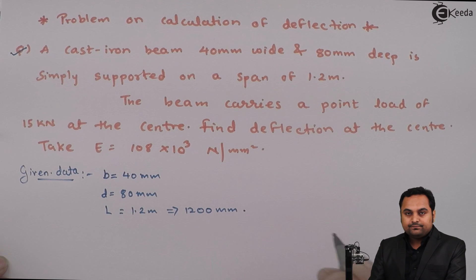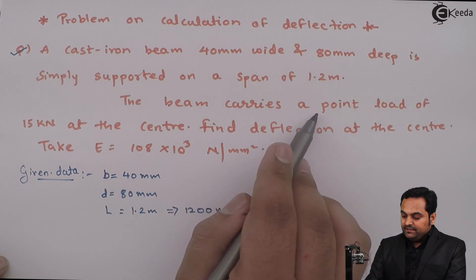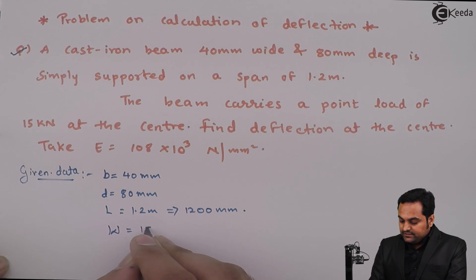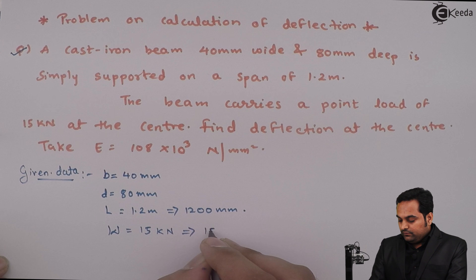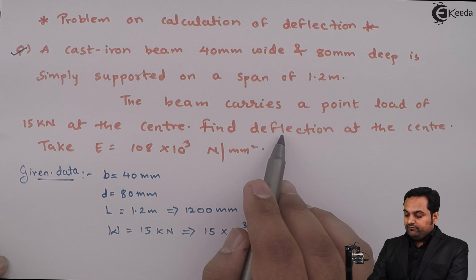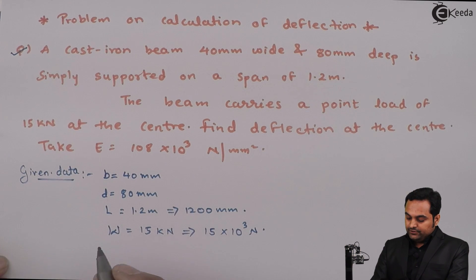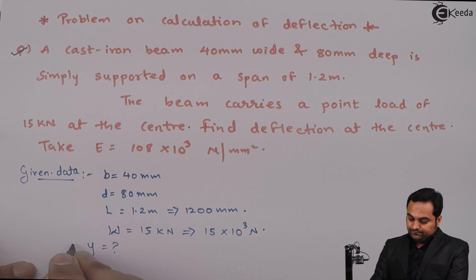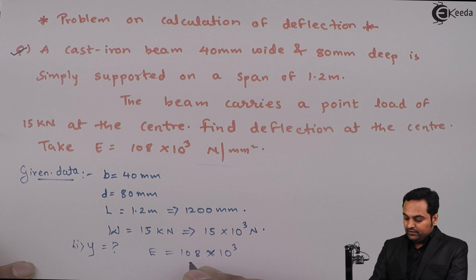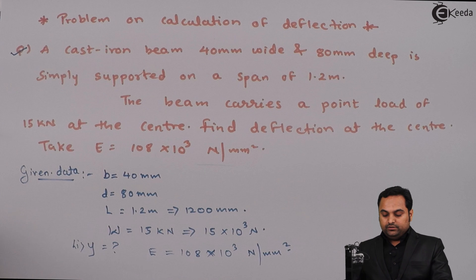So L is 1200 mm. The beam carries a point load of 15 kilonewton, so W is 15 kN, which is 15 × 10³ Newton, at the center. We have to find the deflection at the center — that is, the value of deflection Y at the center. Young's modulus E for the beam material is 108 × 10³ N/mm².